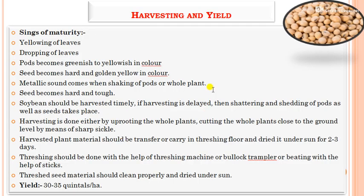For harvesting and yield, signs of maturity include yellowing and dropping of leaves, pods turning from green to yellow, seeds becoming hard and golden in color, and a metallic sound when shaking the pod or plant. Soybean should be harvested timely; delayed harvesting causes shattering and shedding of pods and seeds. Harvesting is done by uprooting or cutting the plant close to ground level with a sharp sickle. Harvested material is dried under the sun for 2 to 3 days, then threshed using a threshing machine, bullock trampling, or beating with sticks. Yield is 30 to 50 quintals per hectare.